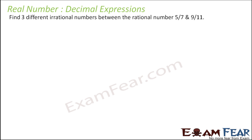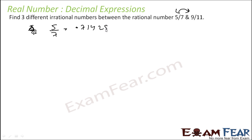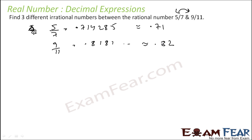Next question: find 3 different irrational numbers between 5 by 7 and 9 by 11. These two are rational numbers, and between them there are infinitely many numbers. 5 by 7 is approximately 0.714285, and 9 by 11 is 0.8181... So we can take the range approximately between 0.71 and 0.82. Numbers like 0.72, 0.73, 0.75, 0.76, 0.79, 0.80 all lie in between.